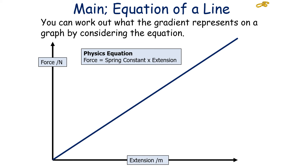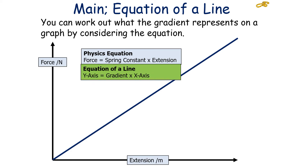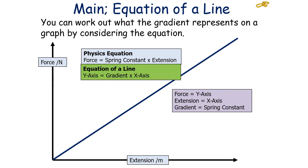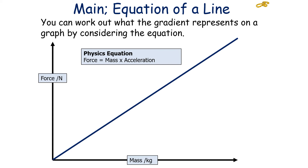You can work out what the gradient represents on a graph by considering the equation. For example, we know force = spring constant × extension. We can relate that to y = mx + c. If it's a straight line through the origin, c = 0, so y = mx. We identify that force is on the y-axis and extension is on the x-axis — so the gradient of the line is the spring constant. Another example: force = mass × acceleration. If we place force on the y and mass on the x, that gives y = mx, so the gradient must be the acceleration.